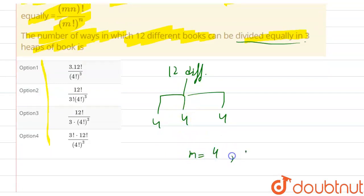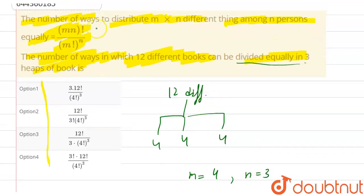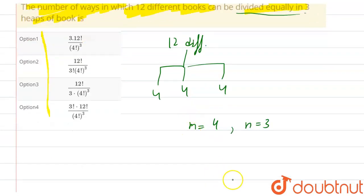So by that we will get the number of ways of distributing: twelve factorial, that is m into n factorial, divided by m factorial, that is four factorial raised to the power n.